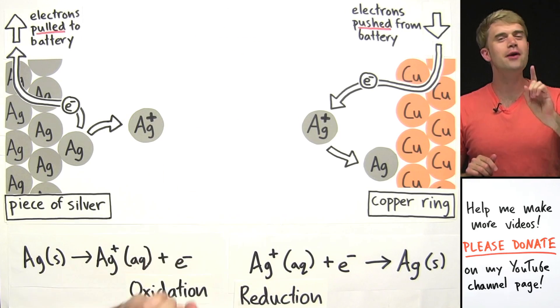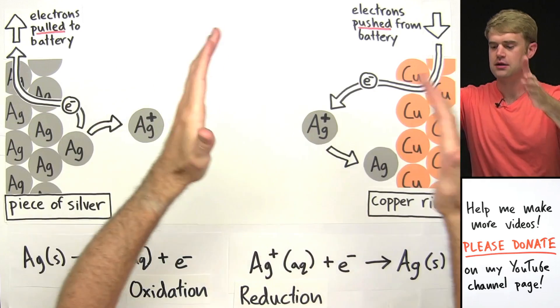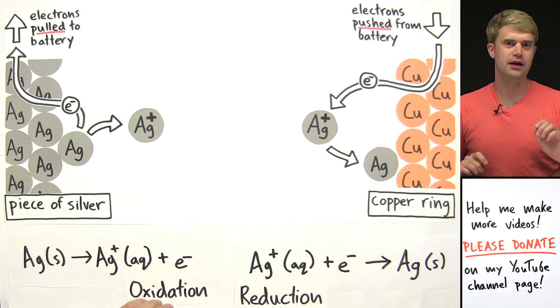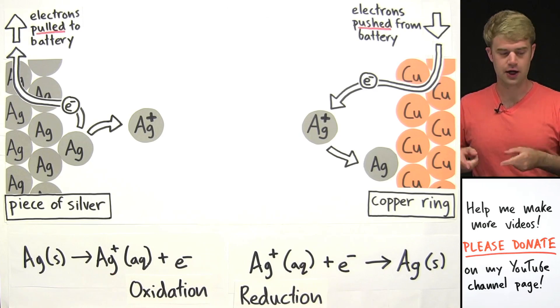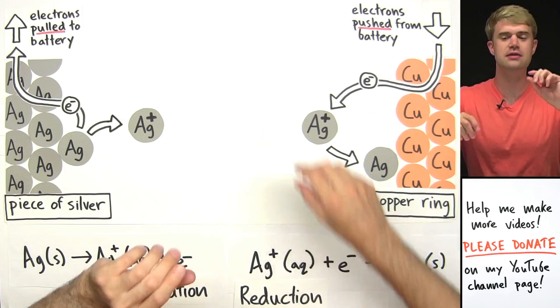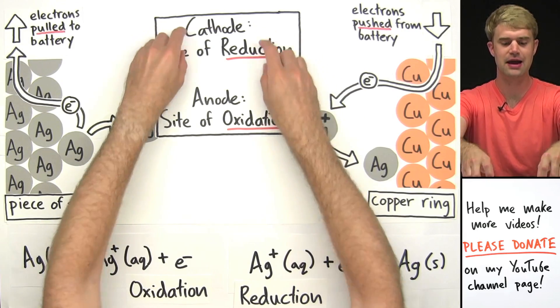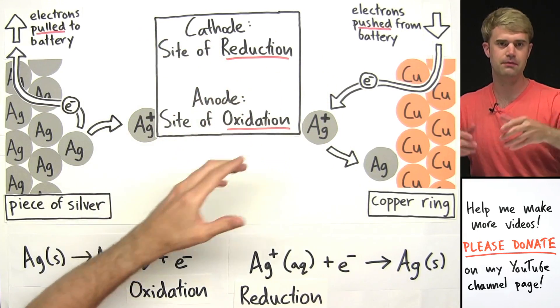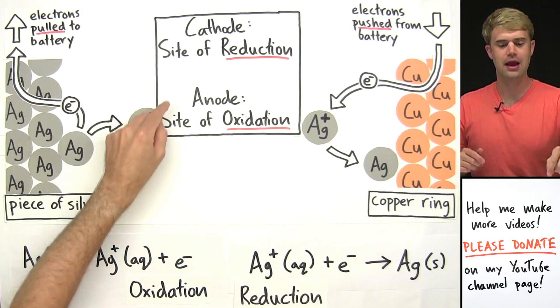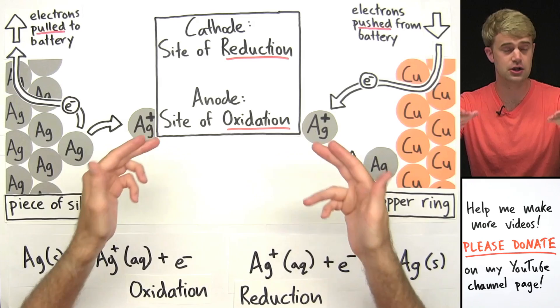So finally, there's one more thing I want to do. We can give names to these parts of the electroplating device based on whether oxidation or reduction is happening there. These are the two names that we're going to be using, cathode and anode. The cathode is the site of reduction, it's where reduction happens. And the anode is the site of oxidation, it's where oxidation happens.